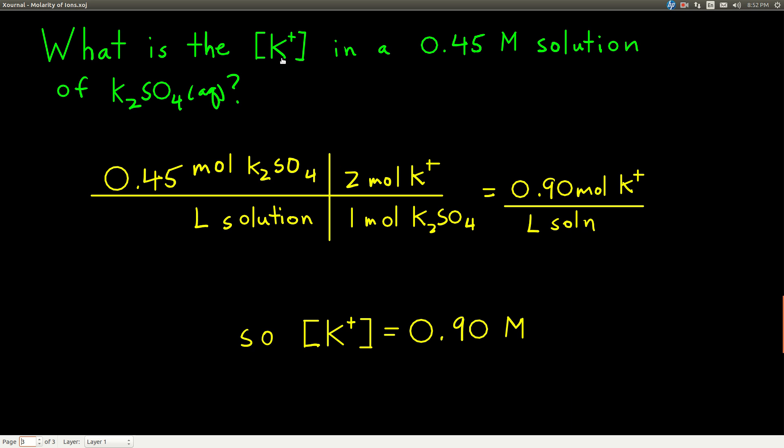So the concentration of potassium ion will just be the concentration of the potassium sulfate, 0.45 moles of potassium sulfate per liters of solution, times 2 moles of potassium. That 2 came from this guy right here, 2 moles of potassium per 1 mole of potassium sulfate. And notice the units you can work out really well. Moles of potassium sulfate cancel, and we get moles of potassium over liters of solution, which is just the molarity of potassium. So the concentration of potassium in this solution is 0.90 molar.